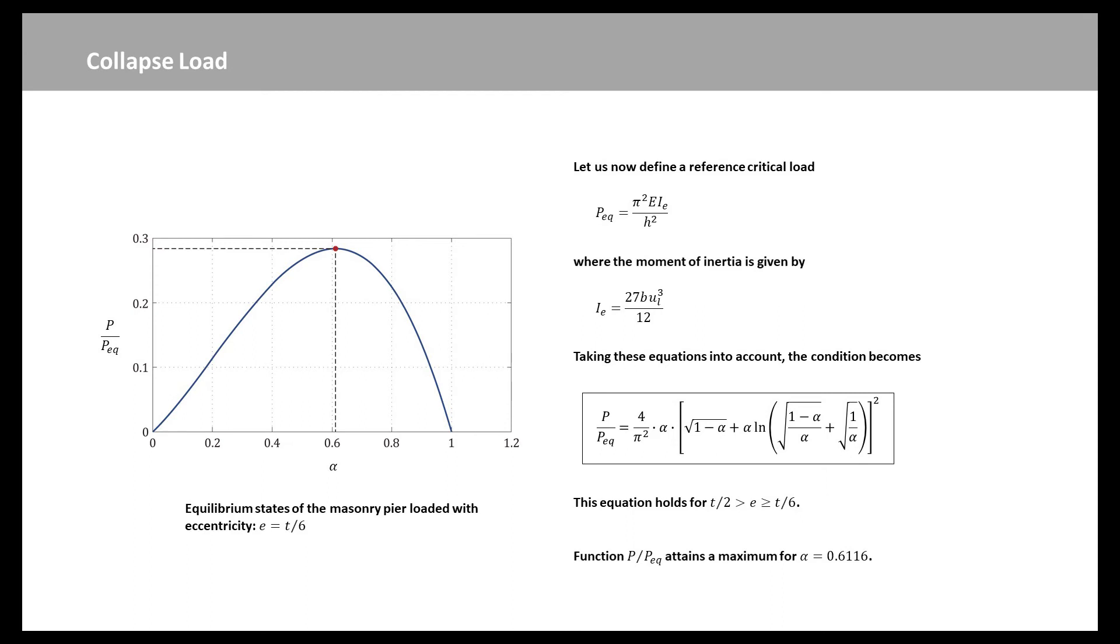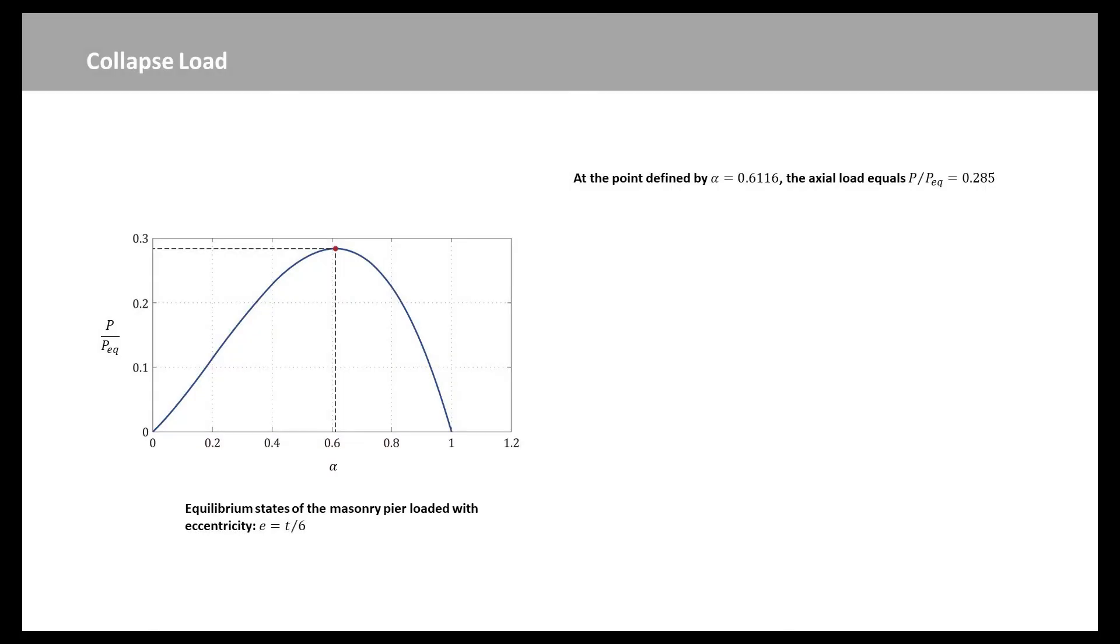This figure gives a dimensionless representation of function P over PEQ by assuming eccentricity E equal to T over 6. In this figure, starting at P equal to 0, load P increases while bending factor alpha equal to UO over UL decreases. The first branch of the equilibrium states describes this behavior for alpha varying from alpha equal to 1 to alpha equal to 0.6115, just where P attains its maximum. All the points belonging to this branch represent a stable equilibrium state. At the point defined by alpha equal to 0.6115, the axial load equals P over PEQ equal to 0.285, which is the maximum load that the pier can sustain. Any further increment of P will now lead to collapse of the pier by loss of equilibrium.